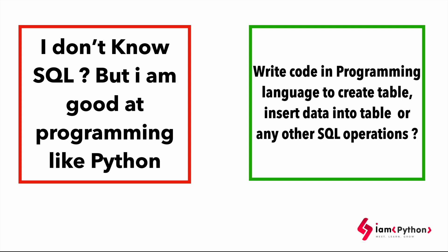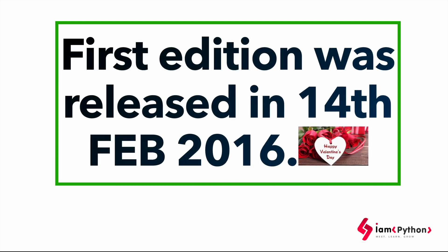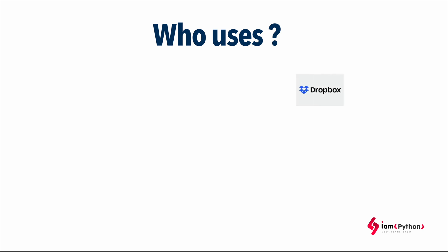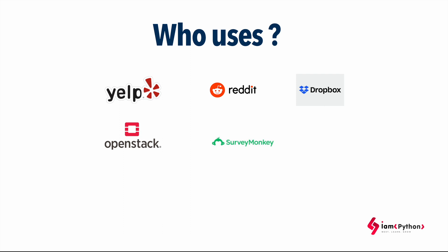That's where the Object Relational Mapper comes into the picture. It is completely ORM — you can write code in Python and that Python code can internally interact with your SQL objects. More importantly, SQLAlchemy can work with many databases. The first edition was released on 14th April 2016. Companies using SQLAlchemy include Dropbox, Reddit, Yelp, SurveyMonkey, and OpenStack.